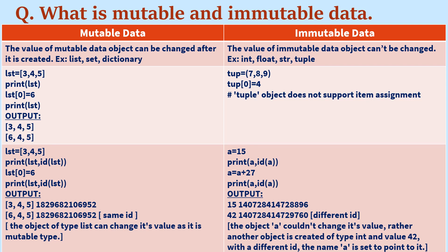But for immutable data, consider a variable 'a' initialized with 15 (an integer). If you print the value and id of 'a', you see some id. Now if you change a = a + 27, the value of 'a' changes, but if you print the id of 'a' again it shows a different id. That means the object 'a' could not change its value; instead, a new object of type int with value 42 and a different id is created, and the name 'a' is set to point to that. This is the difference between mutable and immutable data.